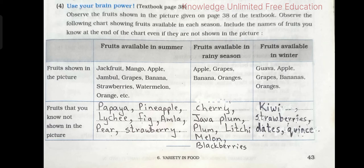Now let's see activity project number four. Observe the fruits shown in the picture given on page number 38 of the textbook. Observe the following chart showing fruits available in each season. Include the names of fruits you know at the end of the chart, even if they are not shown in the picture.